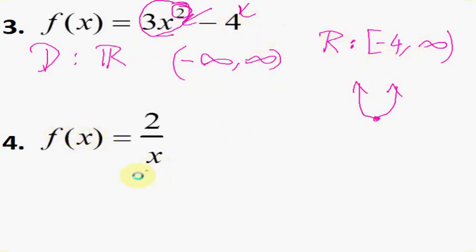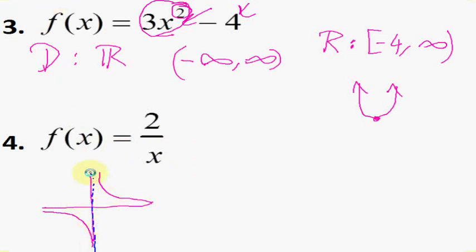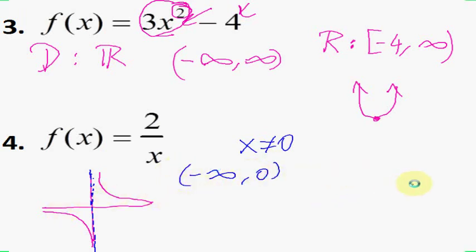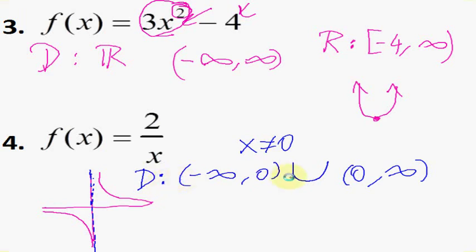For this inverse function — something like 1/x — x cannot equal 0, meaning there is an asymptote there. So x equals 0 is not within our domain. Our domain is everything except 0: anything less than 0, written as (-∞, 0), union with everything bigger than 0, written as (0, ∞). We union the two sets to make a single domain that simply does not include 0. If I had used brackets, I would have included 0, but I didn't.